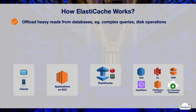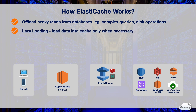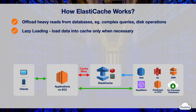ElastiCache supports two caching strategies: lazy loading and write-through. Lazy loading is a caching strategy that loads data into the cache only when necessary. When you enable lazy loading, your application always requests data from the cache first. If the data is found in the cache, which results in a cache hit, ElastiCache returns the data to the application. If the data isn't in the cache or is expired, which results in a cache miss, your application reads data from the database and then updates the cache with the new data.